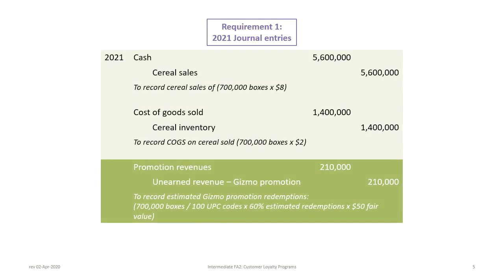Once we've recorded all of the sales, we now have to prepare a journal entry to record the estimated redemptions for the gizmo promotion. The company sold 700,000 boxes of cereal. To redeem for a gizmo, customers have to return 100 UPC codes or box tops — equivalent to 200 boxes. The company estimates that 60% of the boxes sold will be redeemed, and the gizmo has a $50 fair value. So we debit promotion revenues for $210,000 — calculated as 700,000 ÷ 100 × 60% × $50 — and credit unearned revenue for the gizmo promotion.